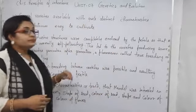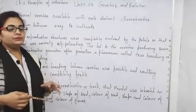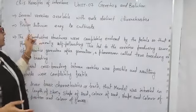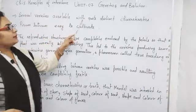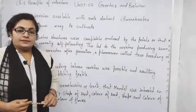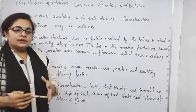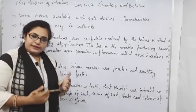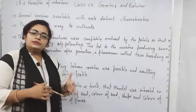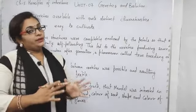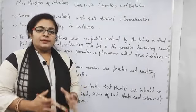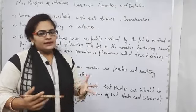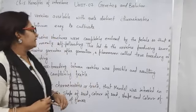Mendel found the following characteristics in Pisum sativum. There are several varieties available with quite distinct characteristics. Out of several varieties, he worked over 22 varieties. Actually, he initially worked on 34 varieties, then narrowed it down to 22 varieties. This was Mendel's own work on 22 varieties of Pisum sativum, also known as garden pea or pea plant.